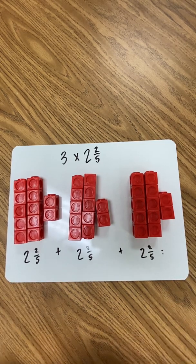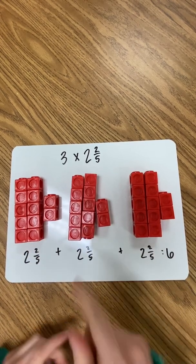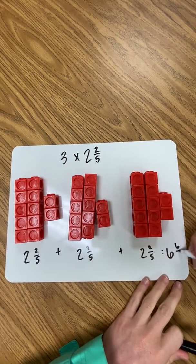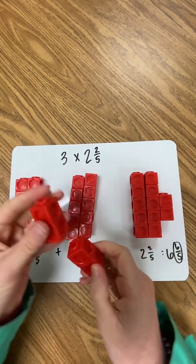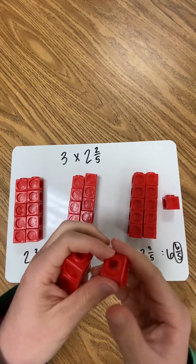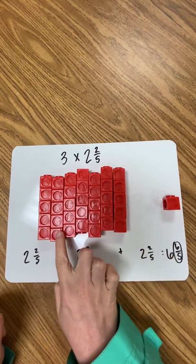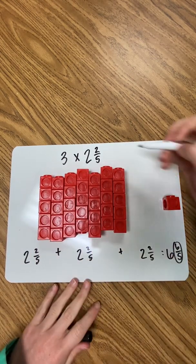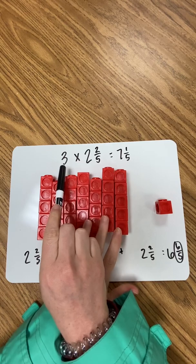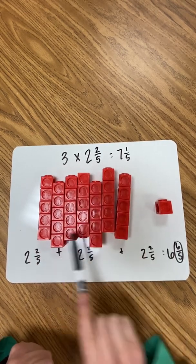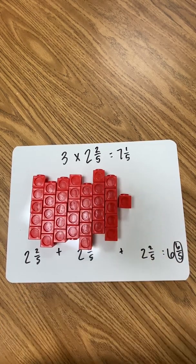They combine those equal groups: two, four, six wholes, and then two, four, six-fifths. They know six-fifths is an improper fraction containing a whole, so they regroup — six-fifths gives one and one-fifth. They can see a total of seven wholes and one-fifth, solving the problem by understanding it means three groups of two and two-fifths using repeated addition.